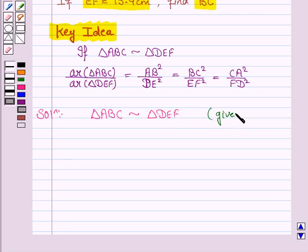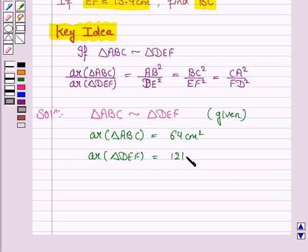We are given that triangle ABC is similar to triangle DEF. The area of triangle ABC is given as 64 cm² and the area of triangle DEF is given to be 121 cm².